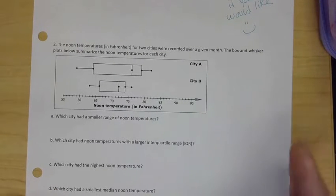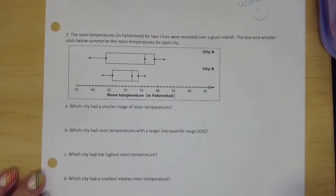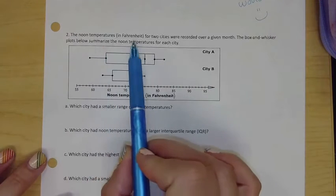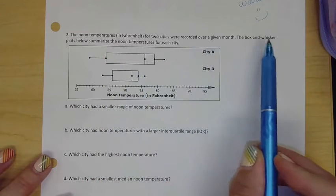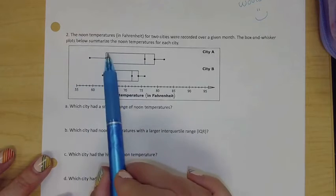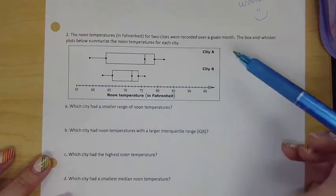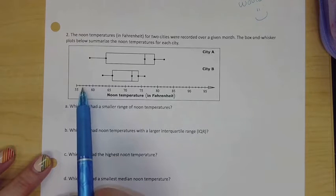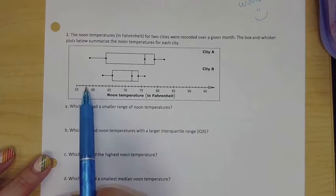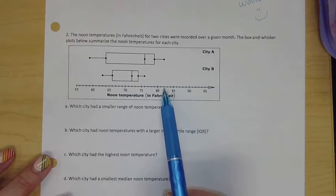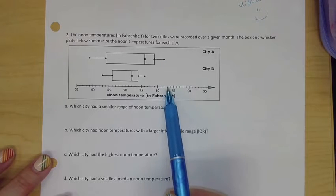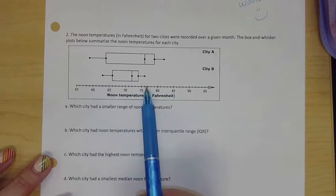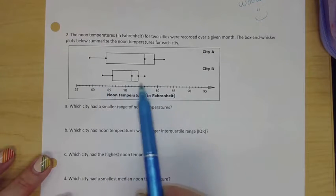We didn't have a chance to compare box plots, so I want to just take a second to kind of go over what happens here when you're looking at two of them. This is noon temperatures in Fahrenheit for two cities that were recorded over a given month. The box and whisker summarize the noon temperatures for each day. Here's City A, here's City B. Noon temperatures, it looks like a minimum of about 58-ish and a maximum of about 82 or 83 for City A, and then 63 to 76 or so in City B.